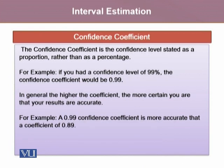The confidence coefficient is the confidence level stated as a proportion rather than as a percentage. For example, if you had a confidence level of 99%, the confidence coefficient would be 0.99. In general, the higher the coefficient, the more certain you are that your results are accurate. For example, a 0.99 confidence coefficient is more accurate than a coefficient of 0.89.